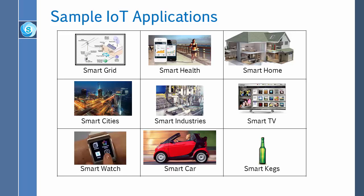Today we have a smart grid, which is the internet of rapid power supply; smart health, smart homes, smart cities, smart industries, smart TV, smart watch, smart car — everything is smart. What that means is they can connect.